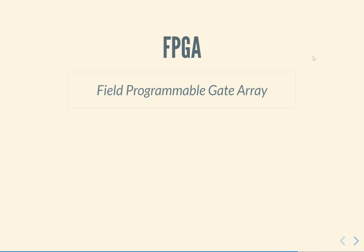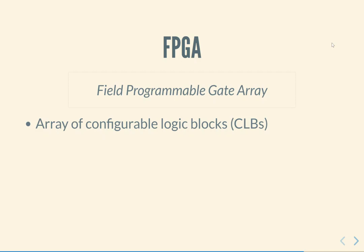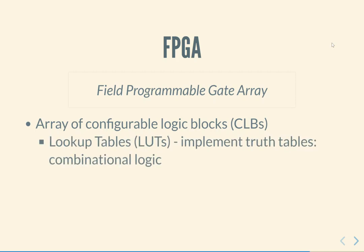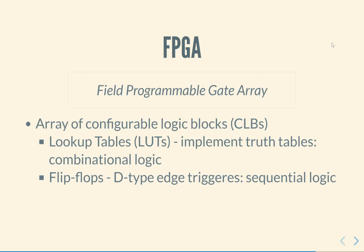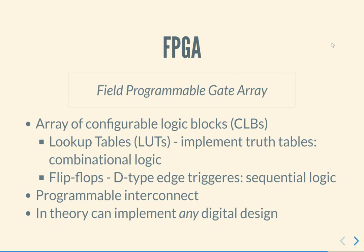How do we design hardware? This is where the FPGA comes in. An FPGA is something called a field programmable gate array. You can think of it as a two-dimensional grid of configurable logic blocks, where a logic block essentially has two parts. One is a lookup table, which you can think of as the truth table of a boolean function and can implement any kind of combinational logic. The second part is a flip flop or D-type edge-triggered flip flop, used to implement sequential logic. Combined with a programmable interconnect, in theory an FPGA can implement any kind of digital design, with the only restriction being the capacity of the FPGA and possibly speed constraints.